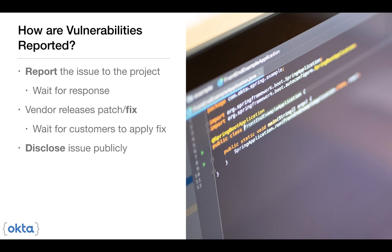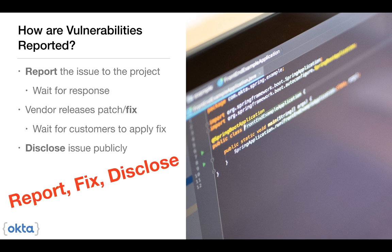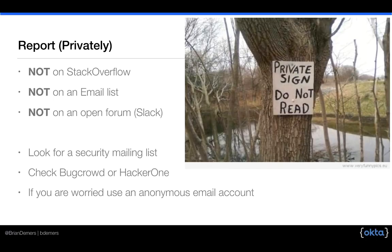So how are vulnerabilities actually reported and dealt with? I think you can break this down into three steps: report, fix, disclose. First, they're reported privately — and that's the key information. If you take nothing else from this talk, this is what you should walk away with. That means you don't go to Stack Overflow, you don't post it on some public mailing list or some Slack channel. The hard part is you have to go find out how to report the issue. Each project will handle this differently. A lot of vendors will have some sort of security mailing list, maybe security at example.com.